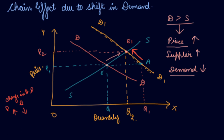Simultaneously, when demand increases it puts upward pressure on price because people are not getting what they are demanding in the market. As price rises, many people can't afford the good — so quantity demanded contracts. At the same time, higher prices mean more profit for producers, so they supply more — there is an extension of supply.